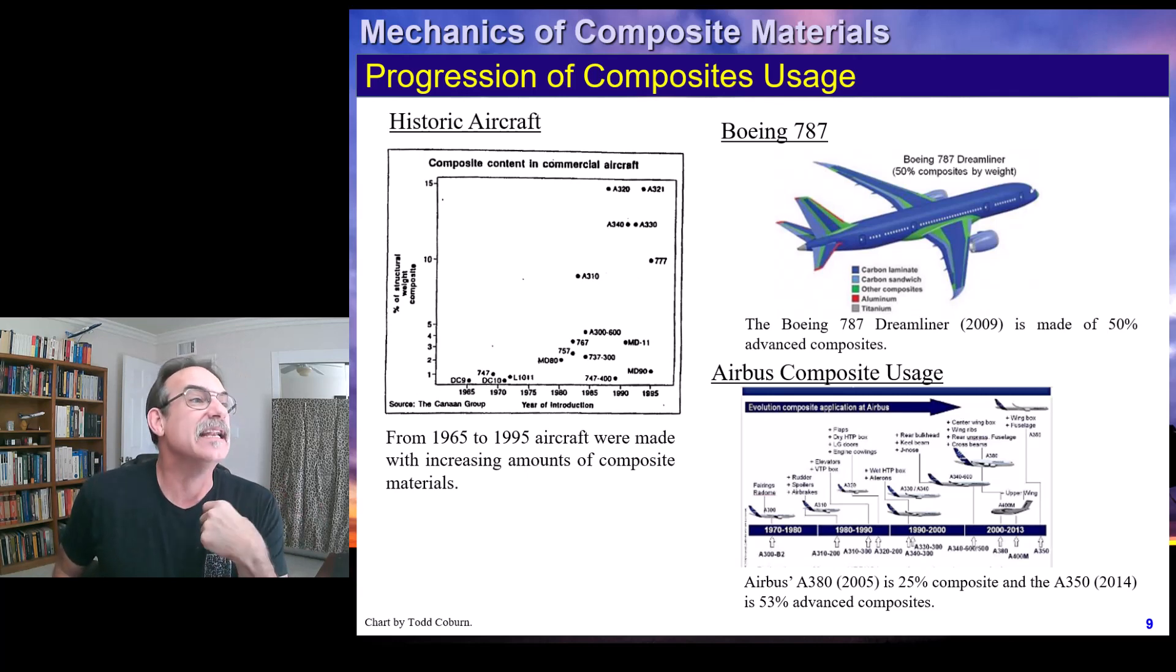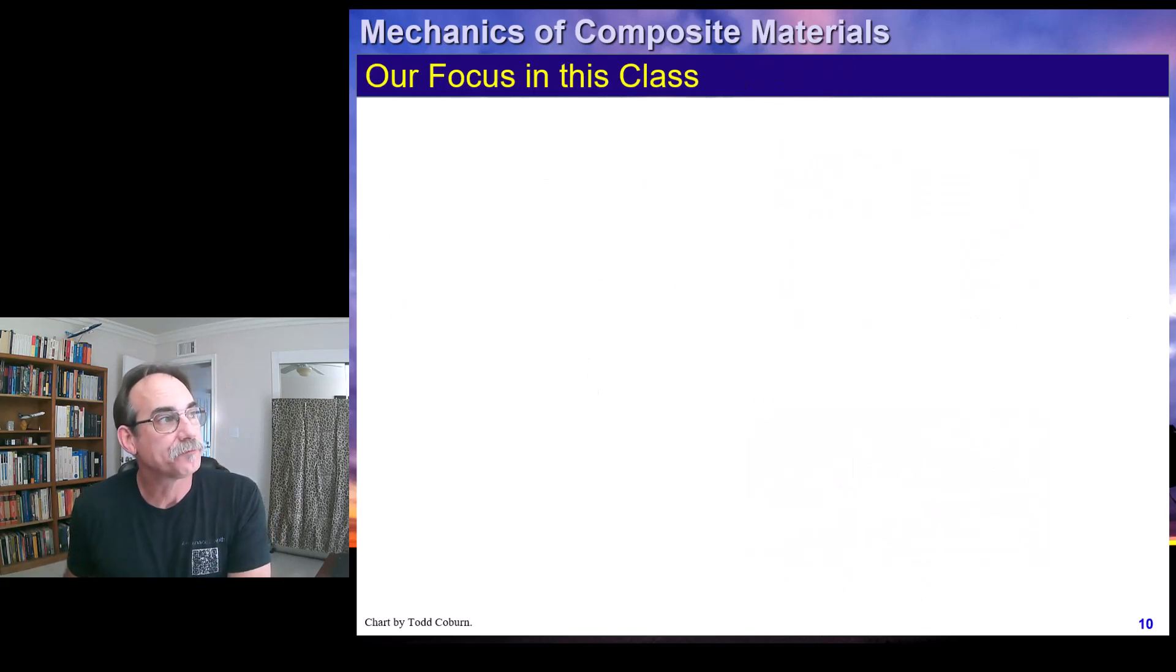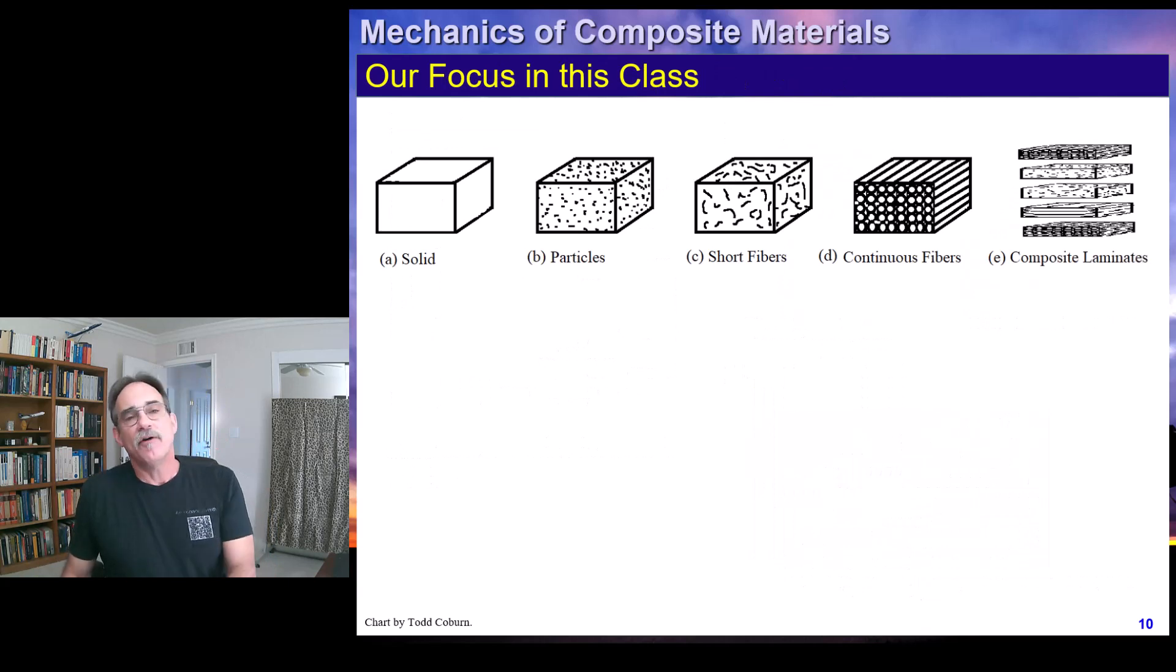Composites has grown significantly as we saw before. The Dreamliner, the 787 Dreamliner, is allegedly something like 50% composite. And the A380 in 2005 was 25% composite and by 2014 also 53% composite. So composite use is growing. You taking the time to learn the techniques that we're going to cover in this class can pay dividends into your career in the future.